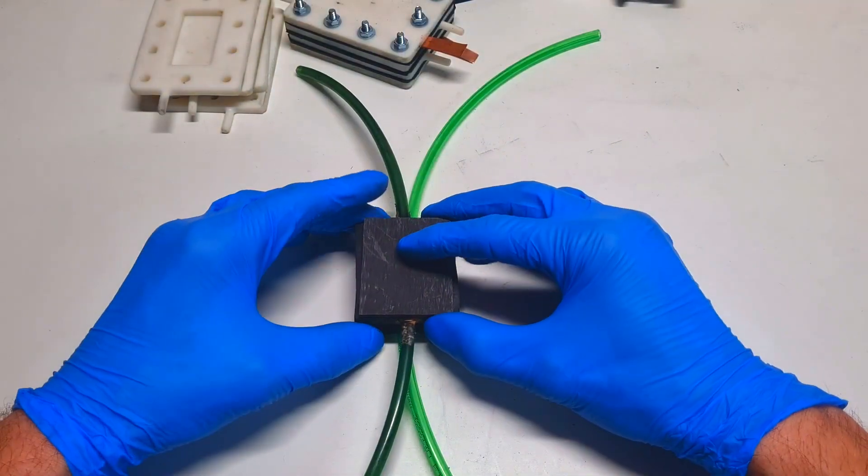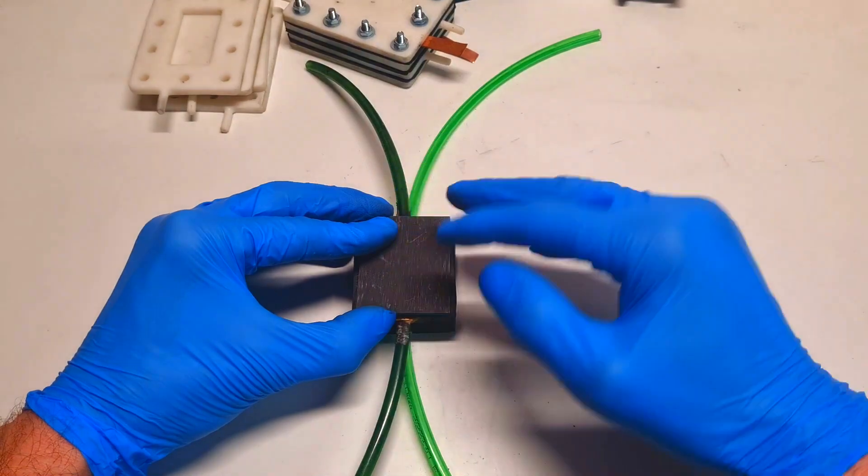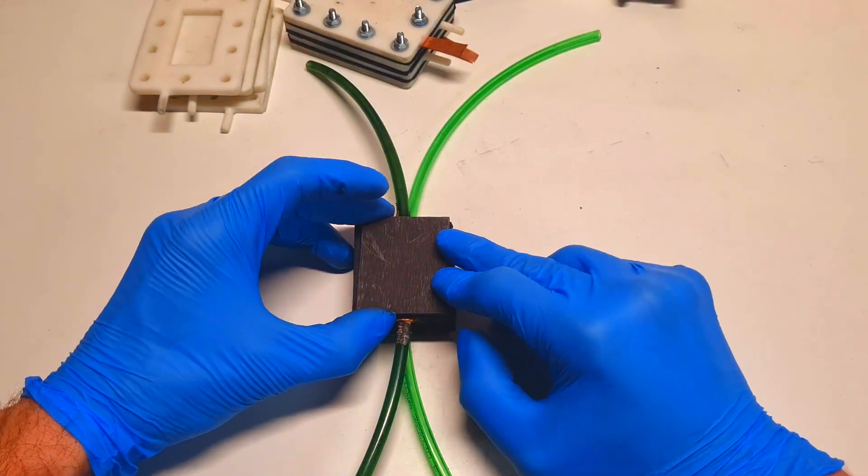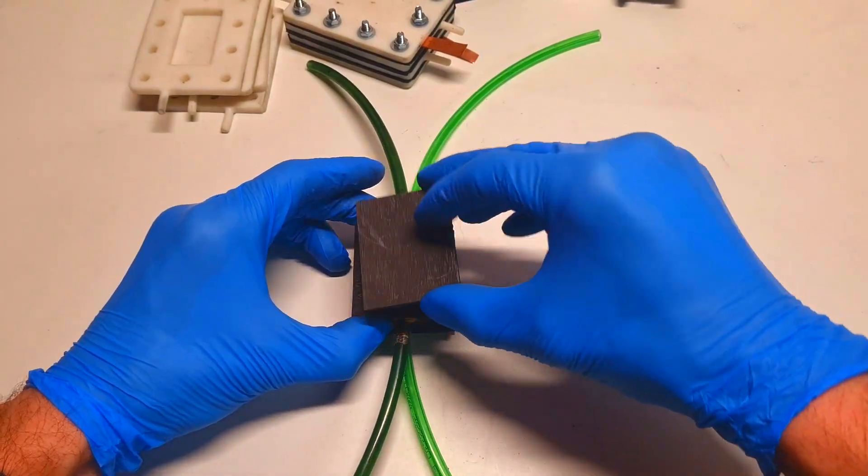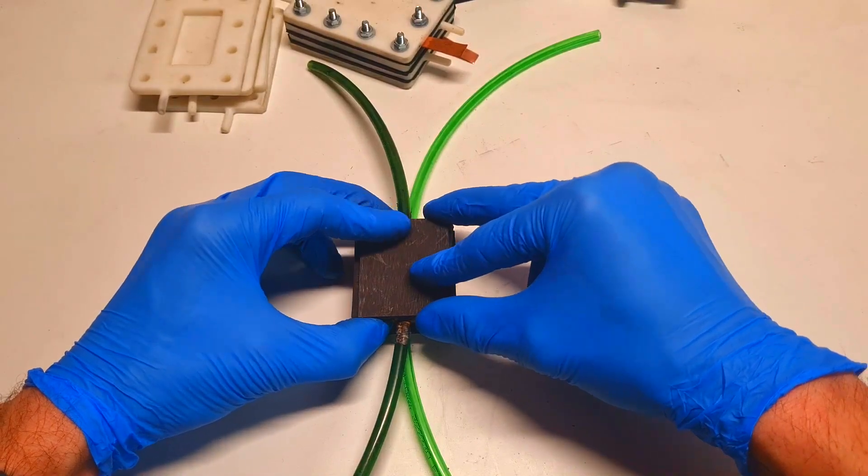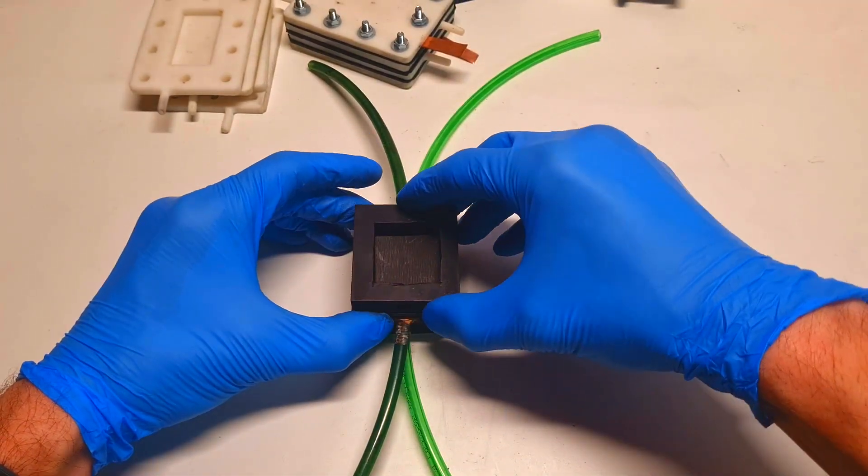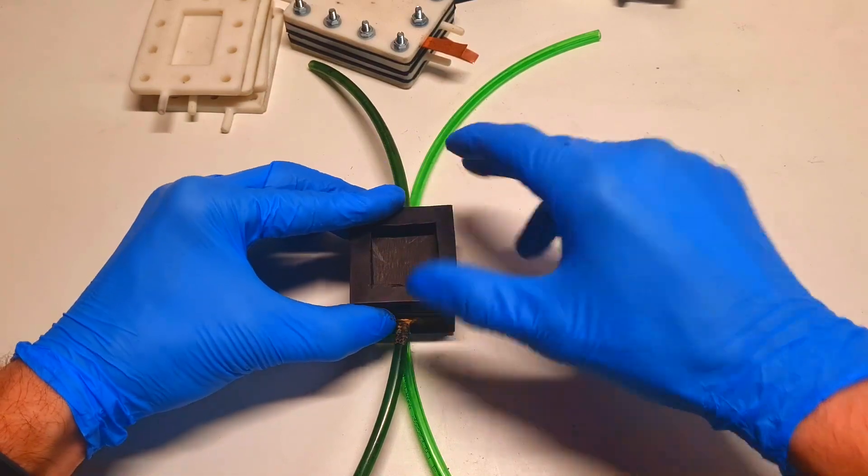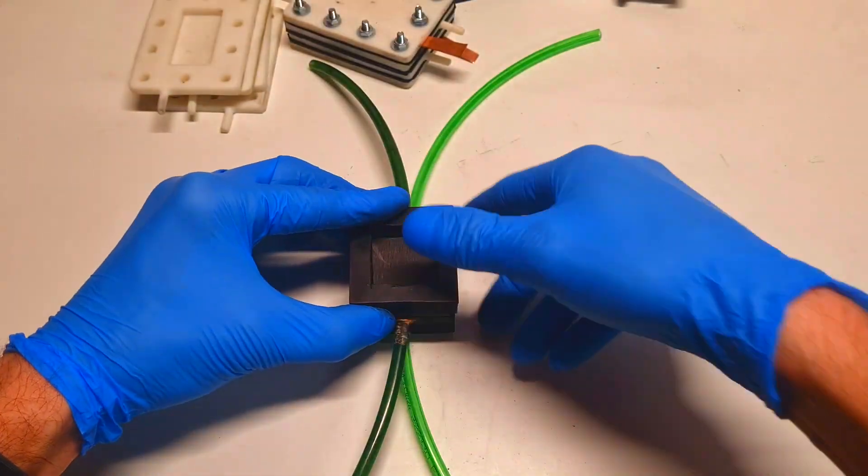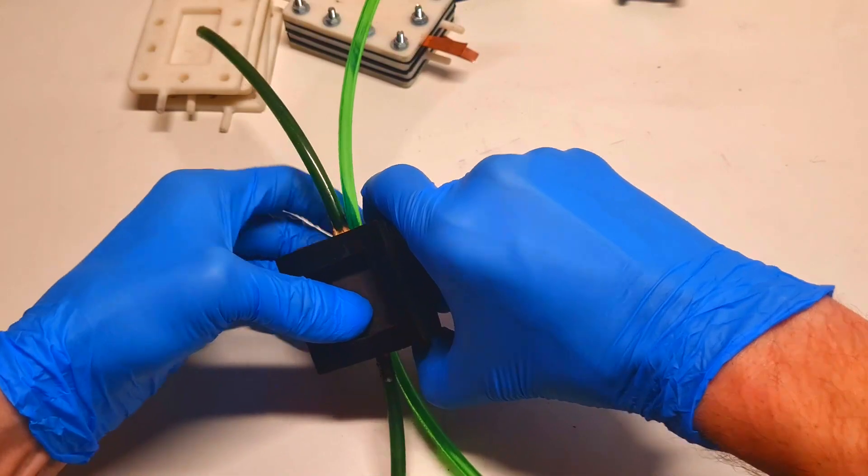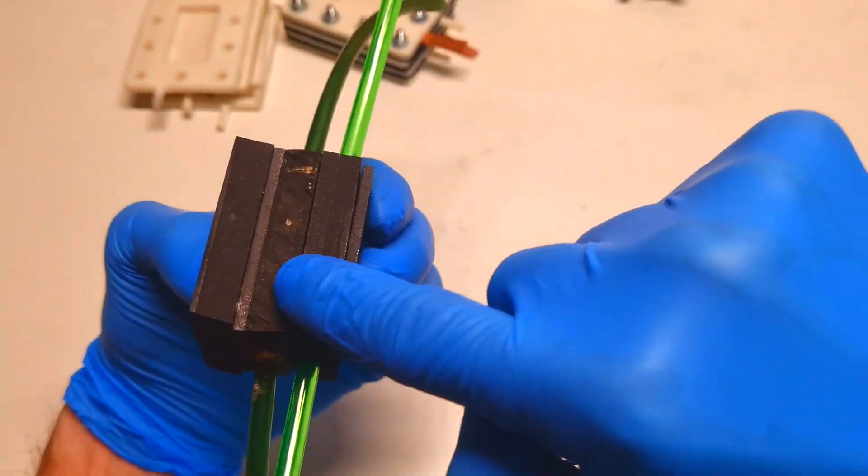But if you want to continue with multiple cells in bipolar formation, then on this current collector again you will put the other cell housing with the pipes, and you will continue with the same assembly which you do over here.